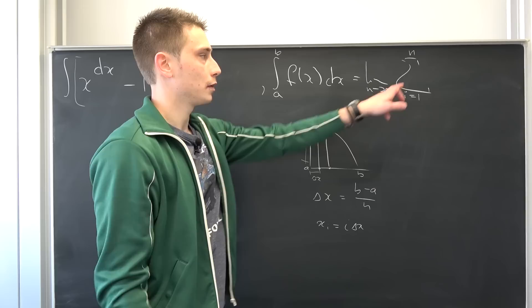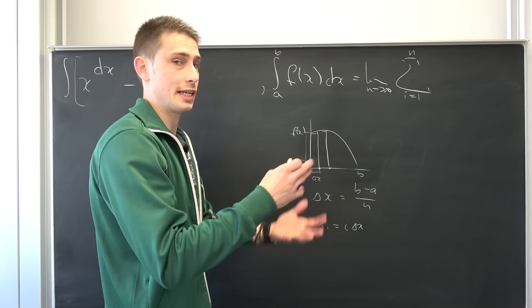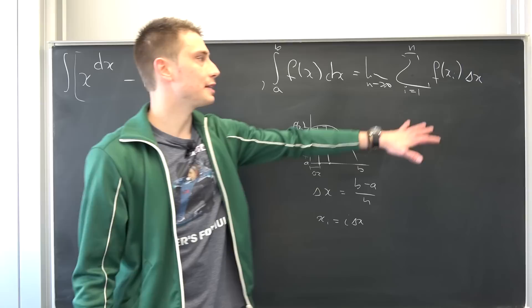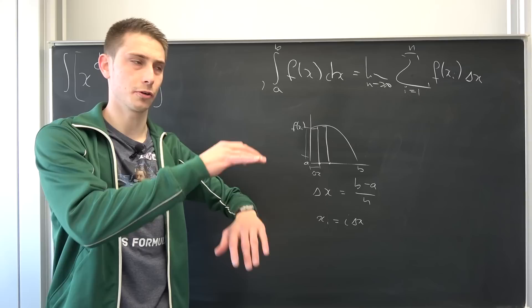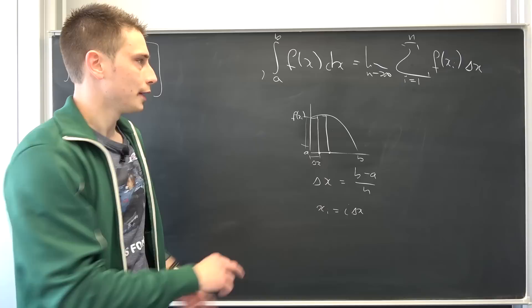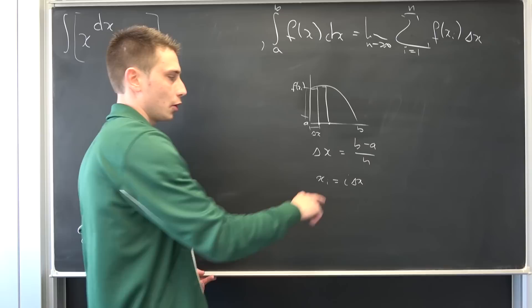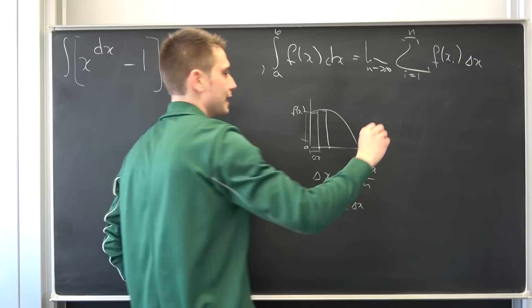Meaning if you plug this into here, summing up infinitely many small rectangles — the area of each rectangle is f(x_i) times delta x. This is what we get; this right here is the Riemann sum definition. And I want you guys to consider something: if you plug our delta x in, and like I said it's more of a heuristic approach, as we let n approach infinity, our delta x is going to go to dx. Delta x in the limit goes to dx for n to infinity.